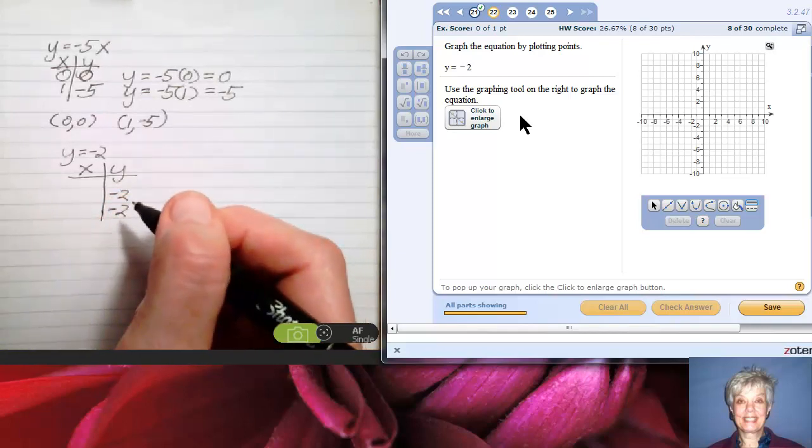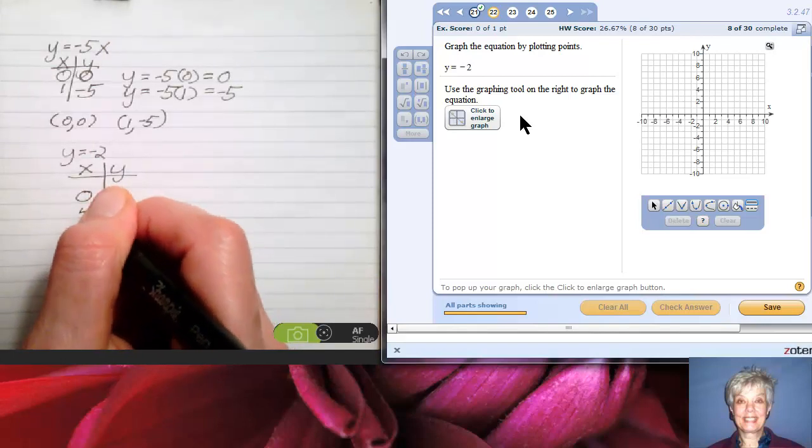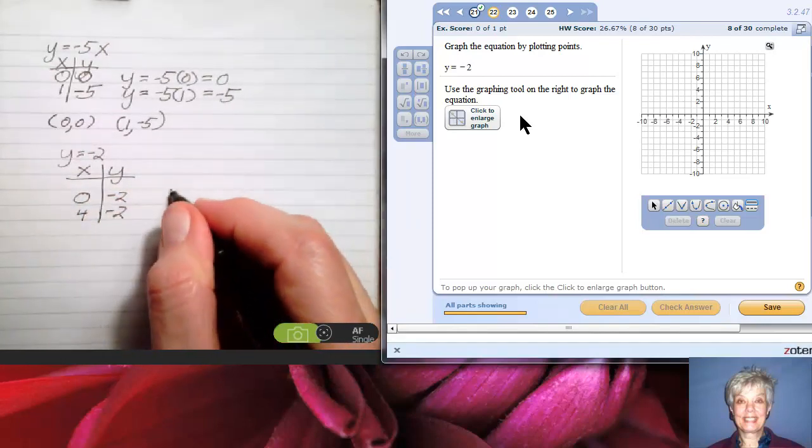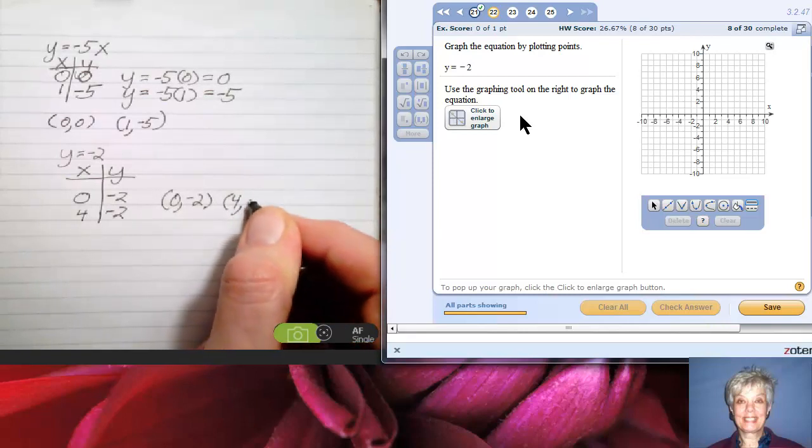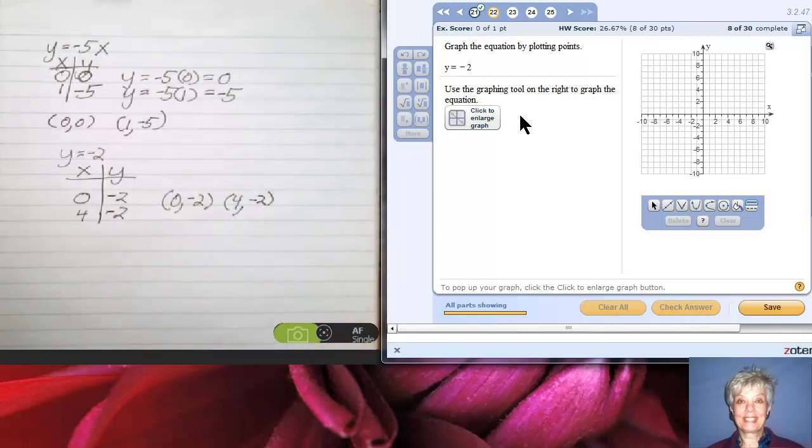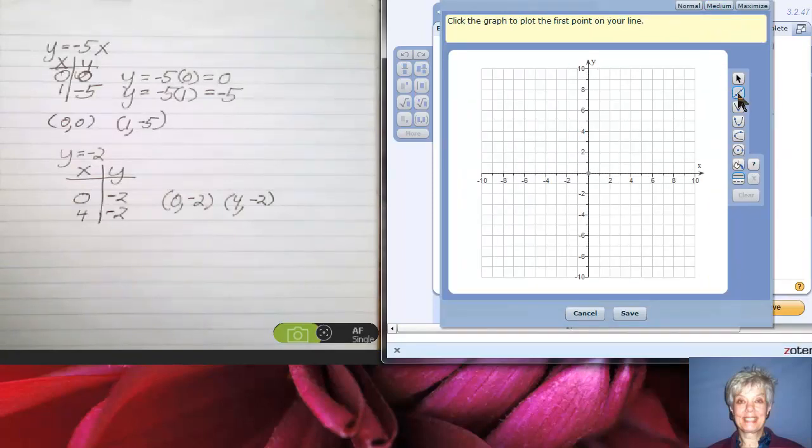Y must be negative 2, negative 2. And I choose some x's, some easy x's to go along with it. How about x equals 0 and x equals 4. Now I have two points: (0, -2) and (4, -2). Let's go to the magnifying glass, click medium, then click the line tool. I'm going to click (0, -2). Click. Then I'm going to go over to (4, -2) and hit click.